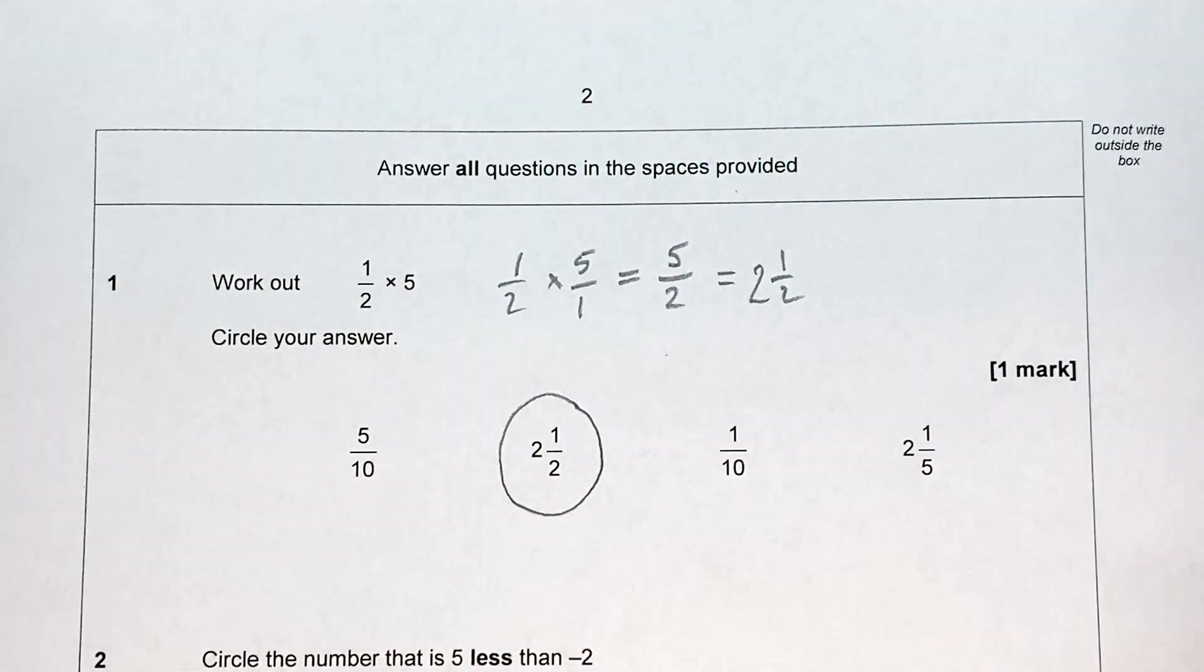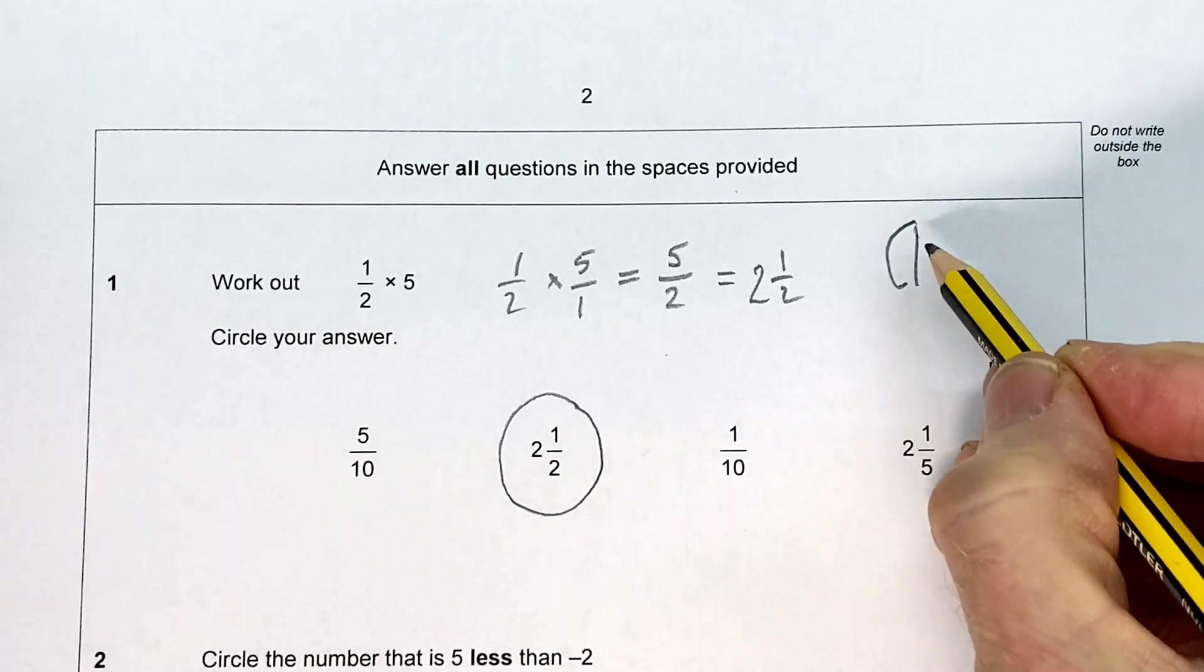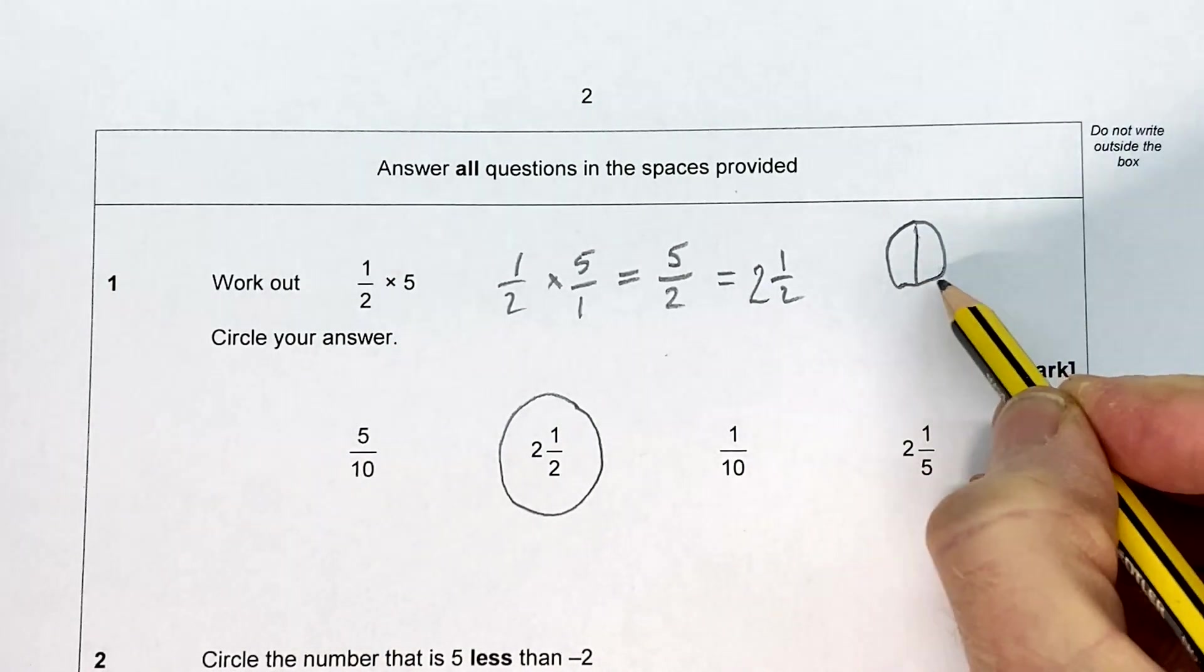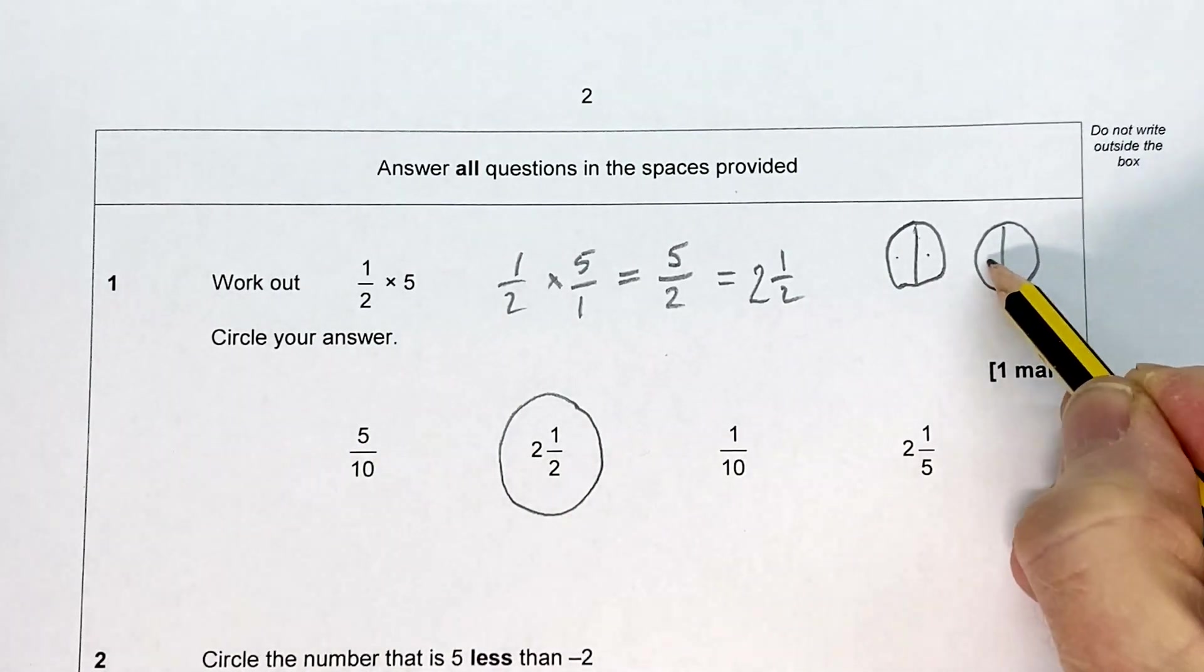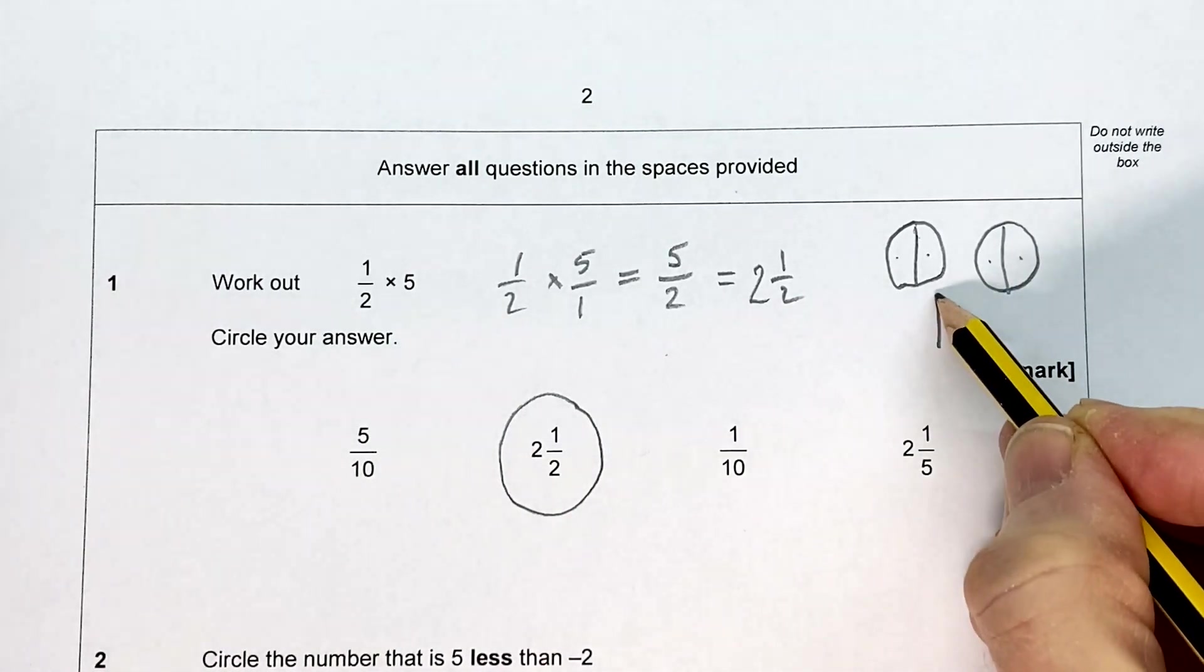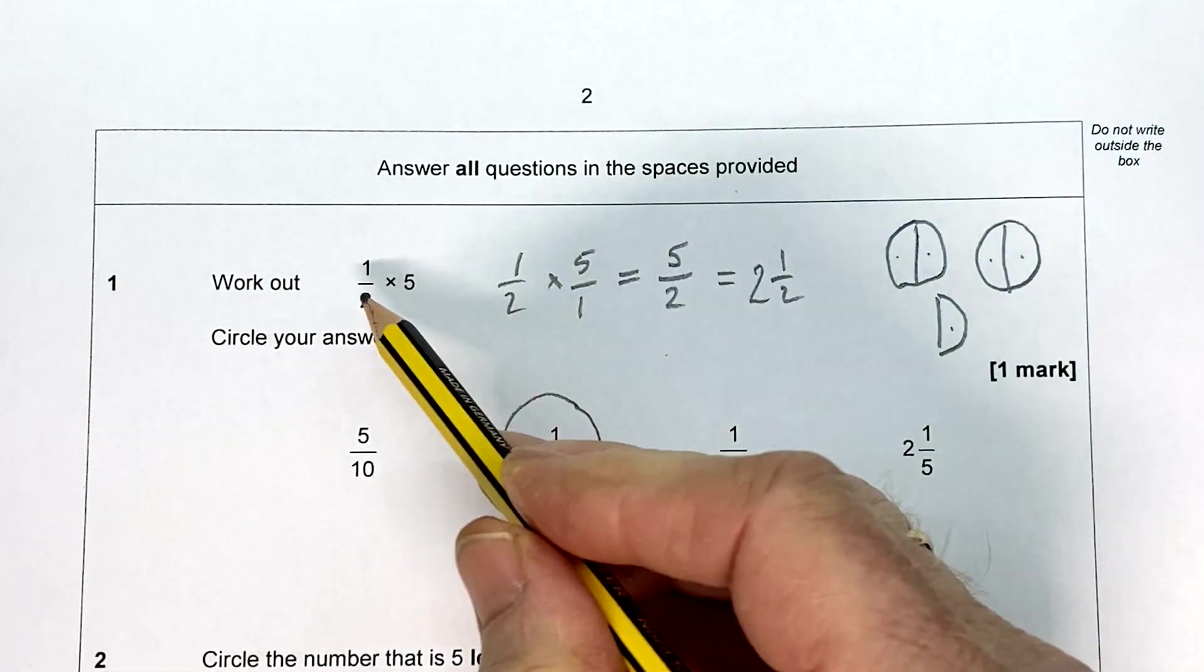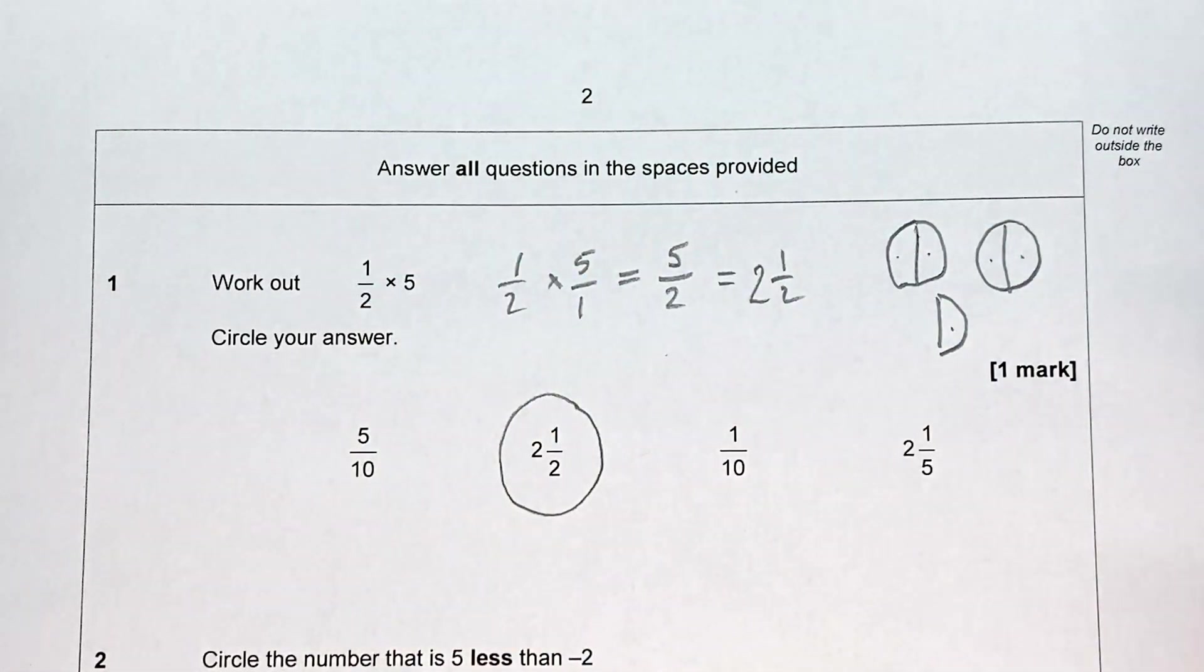The third way is a half times five. Well there's half a cake. There's the other half of the cake. Not very good drawings, but one half, two halves, three halves, four halves, and five halves. Five lots of a half. Two and a half. There it is.